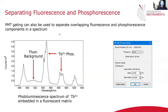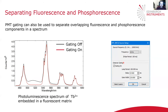The other advantage of having a gated PMT is that it allows you to separate fluorescence and phosphorescence components in the spectra. Using the same terbium and fluorescence sample, when we look at its emission spectrum with no gating we have the transitions from the terbium but also a broad fluorescence background from the matrix. By using detector gating, the spectrum can be acquired only during the emission of the phosphorescence component, so the fluorescence background is removed and you get the spectrum of just the terbium component. Gating can therefore be used to separate the phosphorescence from the fluorescence spectrally.